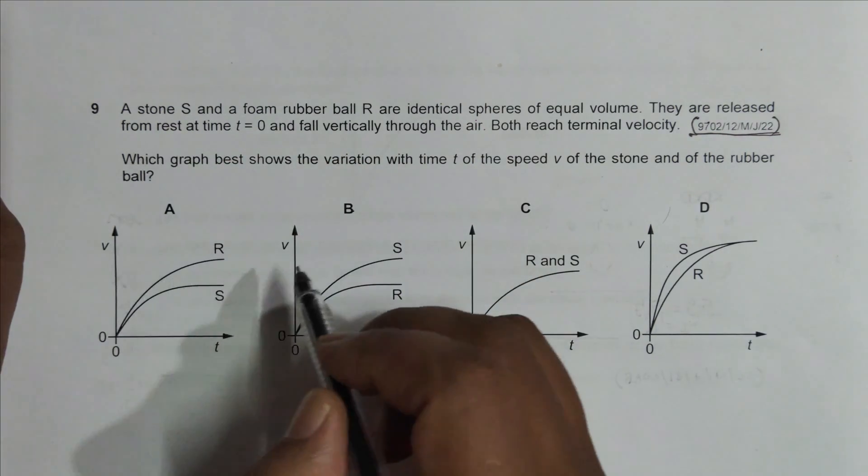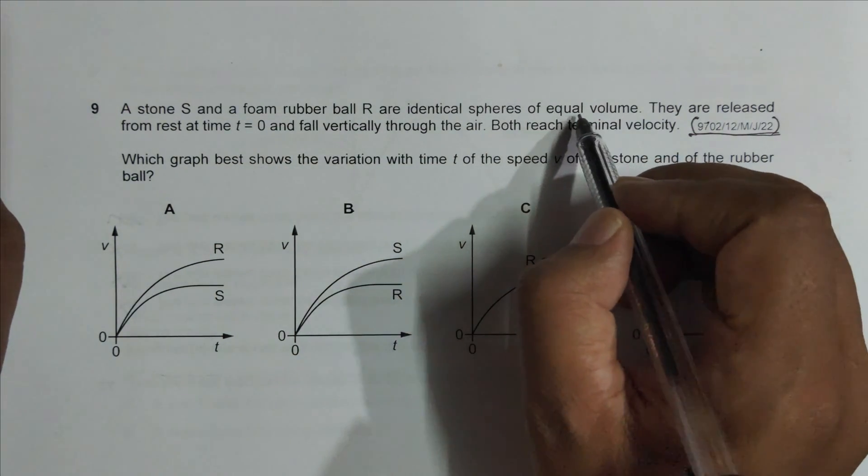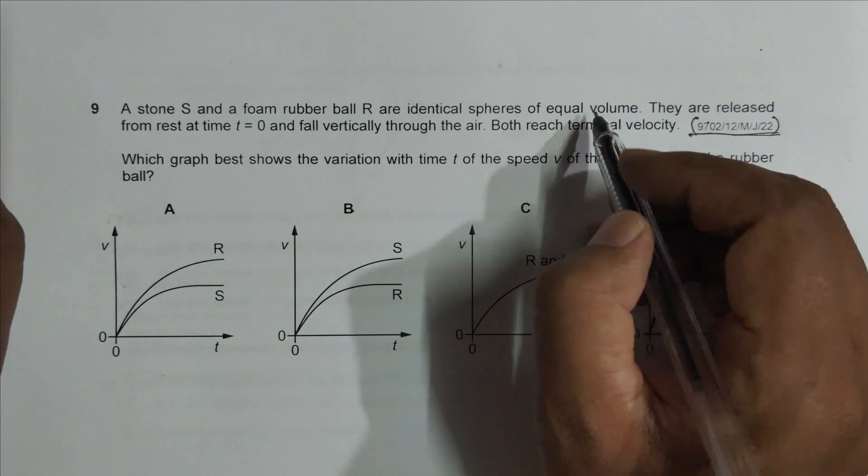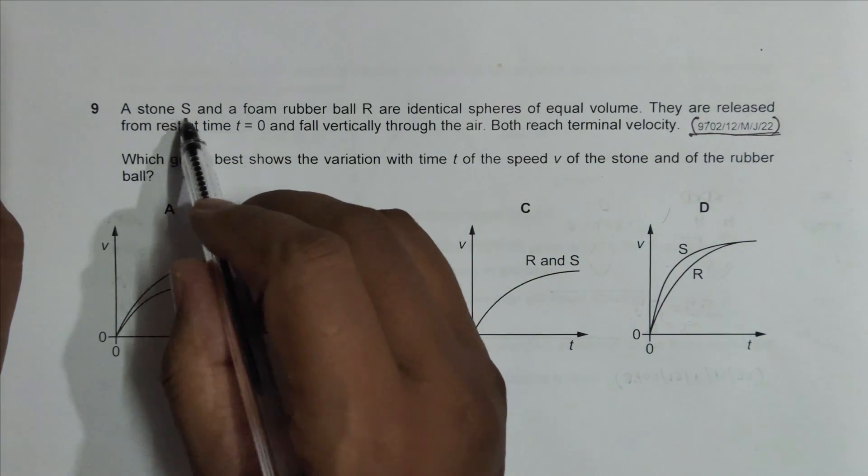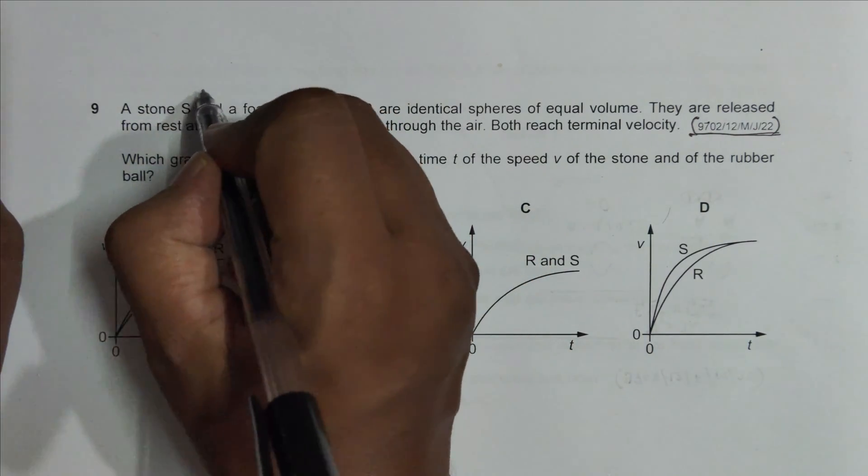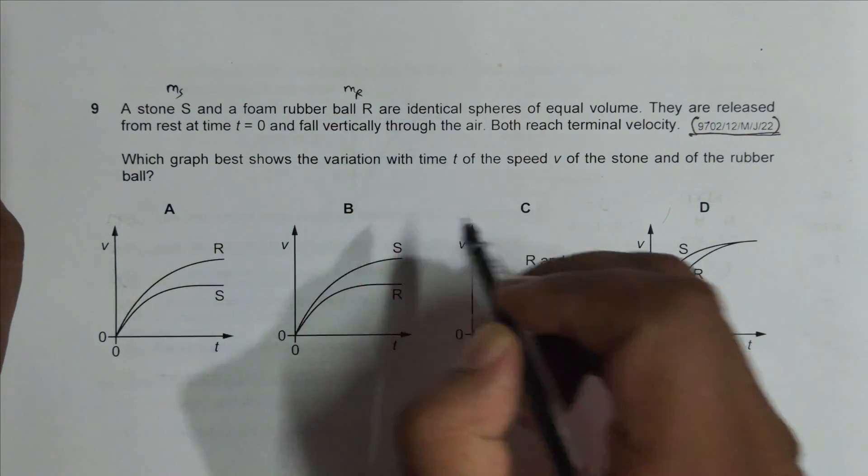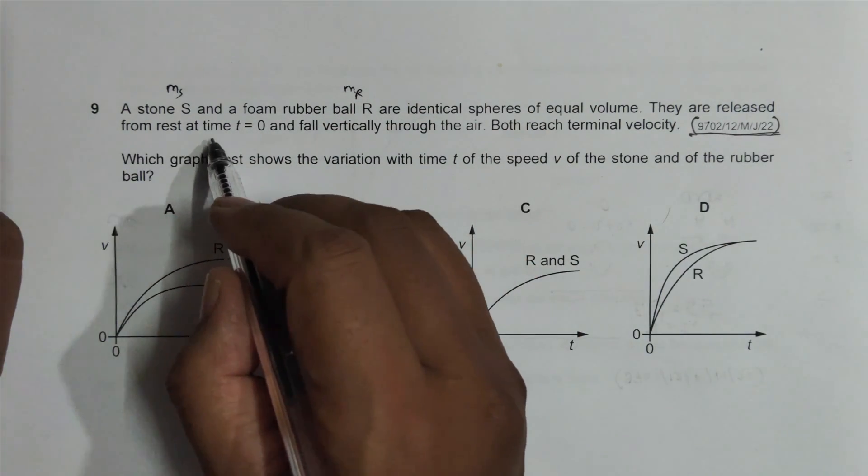...are identical spheres of equal volume. So equal volume means that V is the same, but their masses will be different because they have different densities. So the mass of this is m_S here and here it will be m_R. They are different. They are released from rest at time t = 0 and fall vertically through the air.